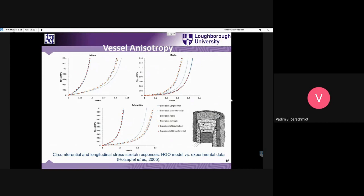This is the next step of introducing additional levels of complexity into the models. The layers of the artery have a distribution of fibers inside them, schematically shown in the bottom right image. This distribution of fibers has some predominant orientation for different layers, resulting in different types of anisotropic mechanical behavior.